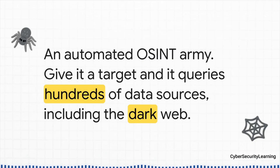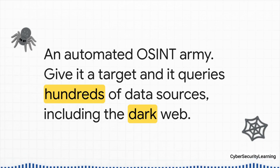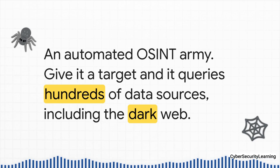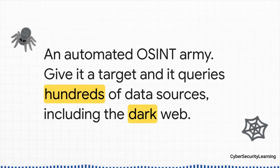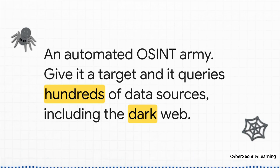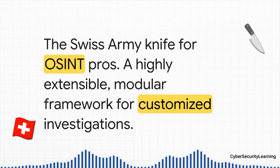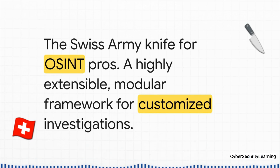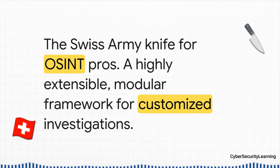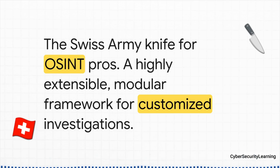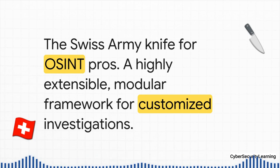Investigations don't just stay on the dark web. Often you'll find a username or an email and need to see where else it appears on the regular internet. For that, you unleash Spiderfoot — an open-source powerhouse that automates OSINT gathering across more than a hundred public sources at once, finding connections you would never find on your own. For real power users who need absolute control and customization, there's ReconNG — less of a single tool and more of a complete command-line framework that lets you build your own investigation workflow by chaining together different modules.